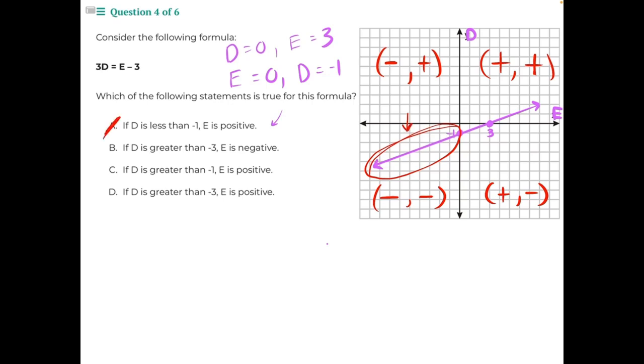B and D both say if d is greater than negative 3, then e is either positive or negative. And negative 3 is not one of our intercepts, so that makes B and D also incorrect.